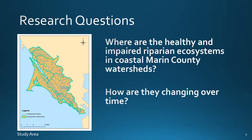This project began with two questions: Where are healthy and impaired riparian ecosystems in coastal Marin County watersheds? And how are they changing over time? Our objective was to create a map of the riparian ecosystems within the study area showing overall riparian health according to three specific parameters, so that restoration ecologists and planners in Marin County could focus on the most degraded watersheds and those that have a historic decline in overall riparian health.